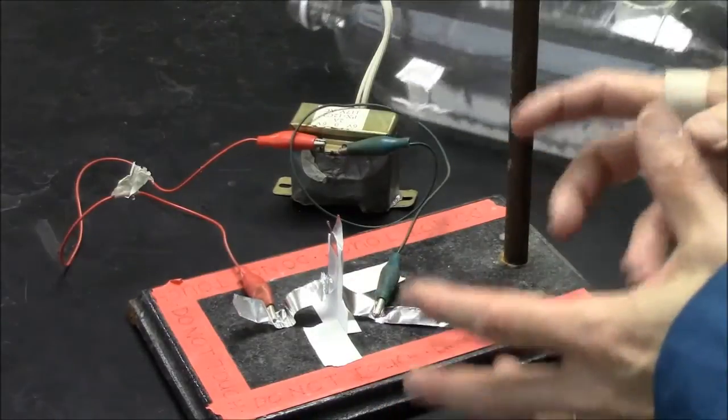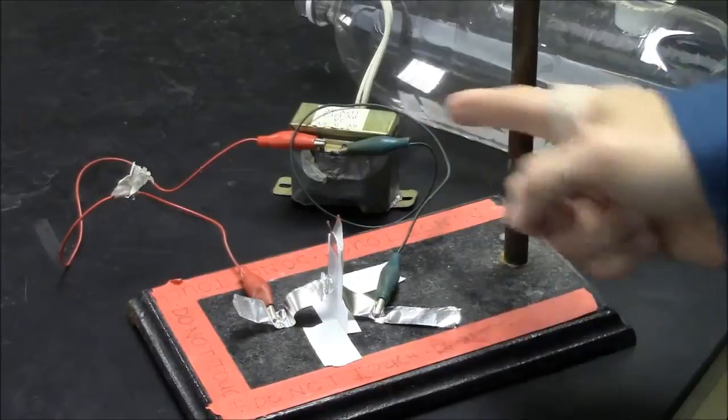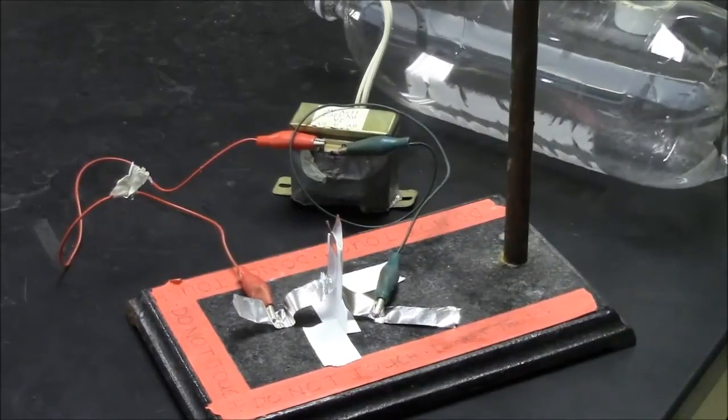So the way we'll launch the rocket is by plugging in the transformer, sending the electricity through the aluminum foil.